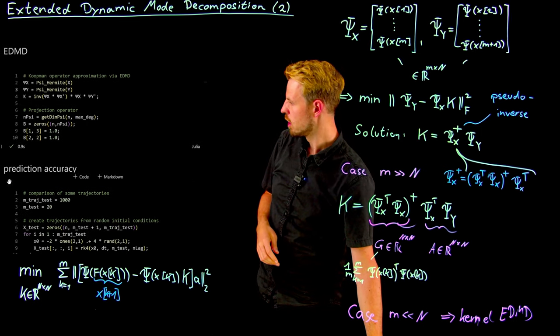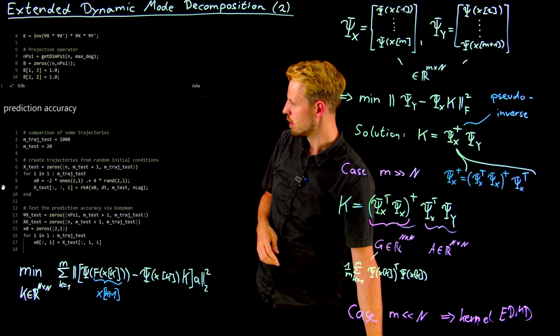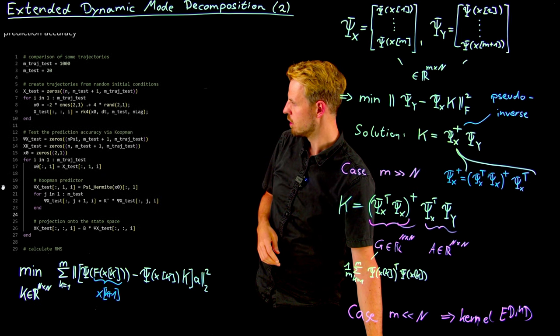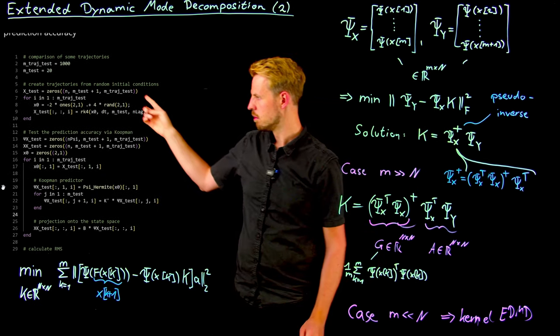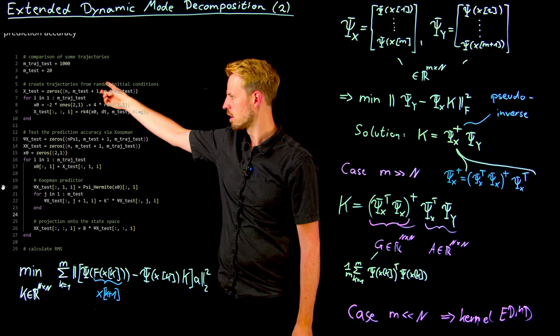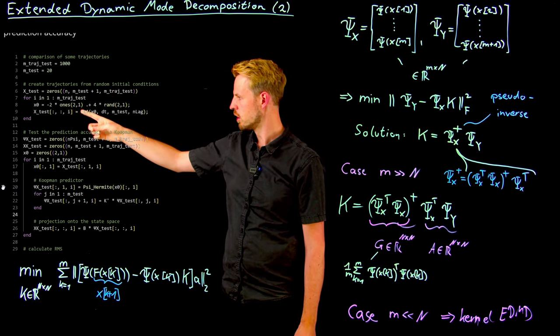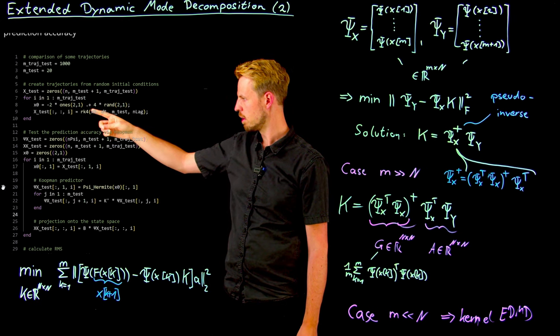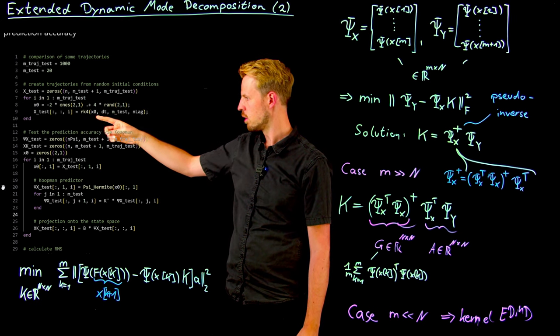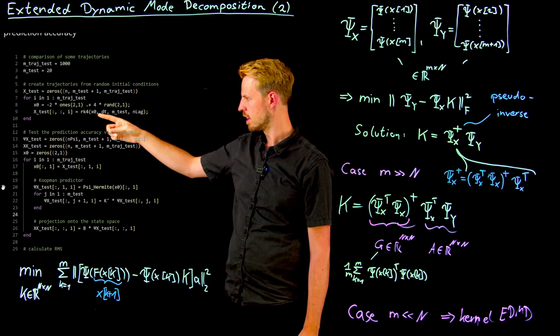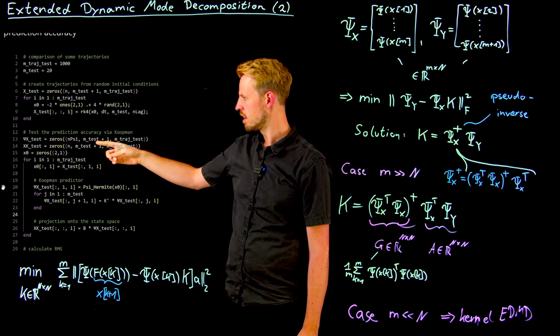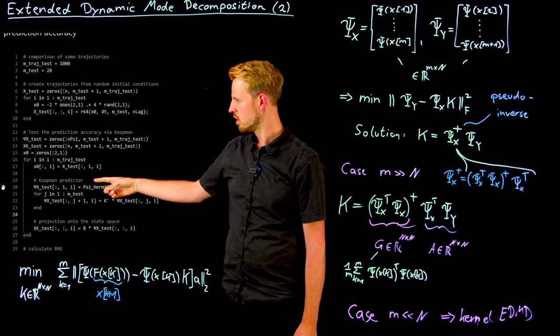And so what we can do now is we can study the prediction accuracy. So what we are coding up here is 1,000 test trajectories of length 20, and then we simply pick random initial conditions in a box between minus 2 and plus 2, integrate the Runge-Kutta scheme. So this is our exact data.